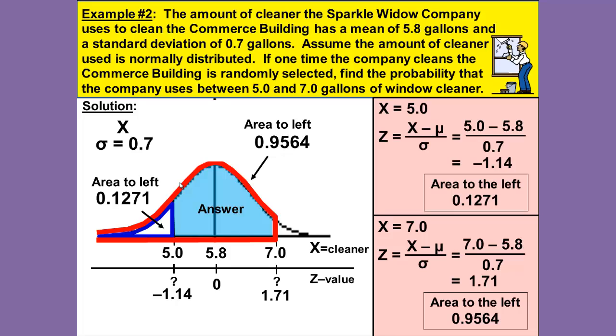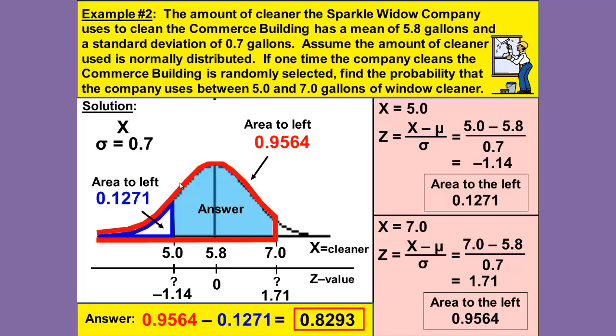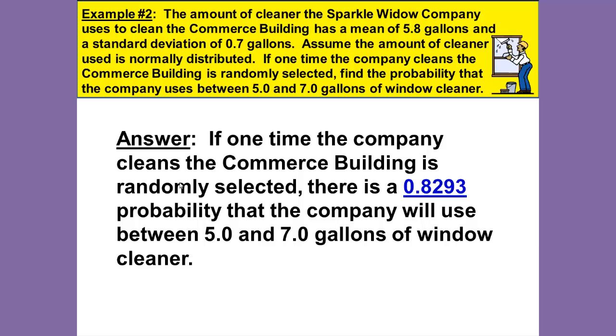So we will need to take and to find our answer subtract 0.9564 subtract 0.1271. That gives us our answer as 0.8293. Our answer is if one of the time the company cleans the Commerce Building is randomly selected, there's a 0.8293 probability that the company will use between 5.0 and 7.0 gallons of window cleaner.